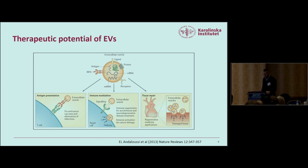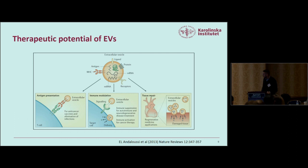Switching to therapeutic use, the three main areas where EVs have been used are: antigen presentation, where early work aimed to pulse antigen-presenting cells with tumor antigens, harvest the EVs, and use them as a cell-free product to raise an antitumor immune response; immunomodulation, using EVs from mesenchymal stem cells or other stromal cells with inherent immunomodulatory capacity to suppress inflammation; and tissue repair and tissue regeneration.